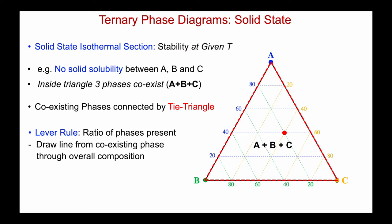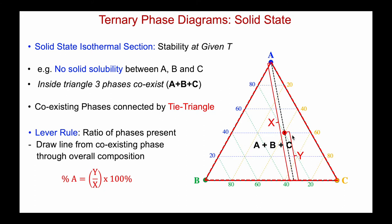The way we do that for a ternary system is to draw a line from the overall composition through the coexisting phase of interest — let's say A — from pure A through the composition to the opposite side of the triangle. By measuring the length y (from our composition to the opposite side) divided by the overall length of the line x, then y/x multiplied by 100 gives us the percentage of A. We can do the same for B and C.